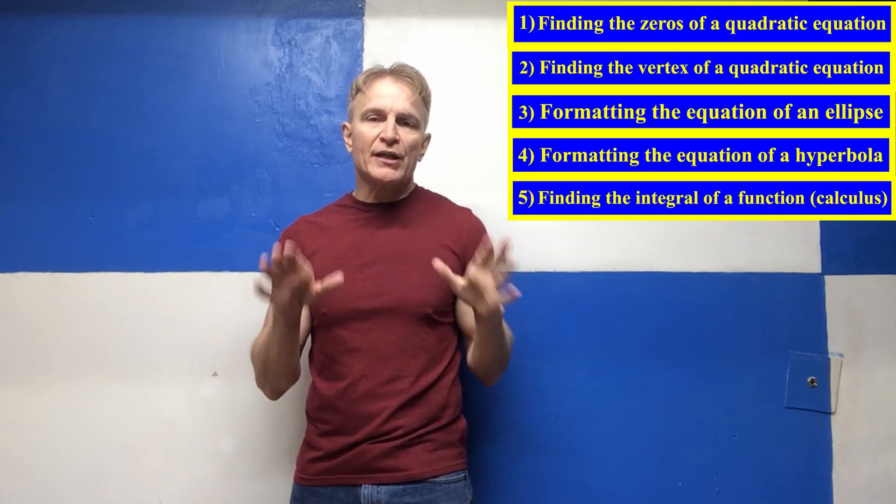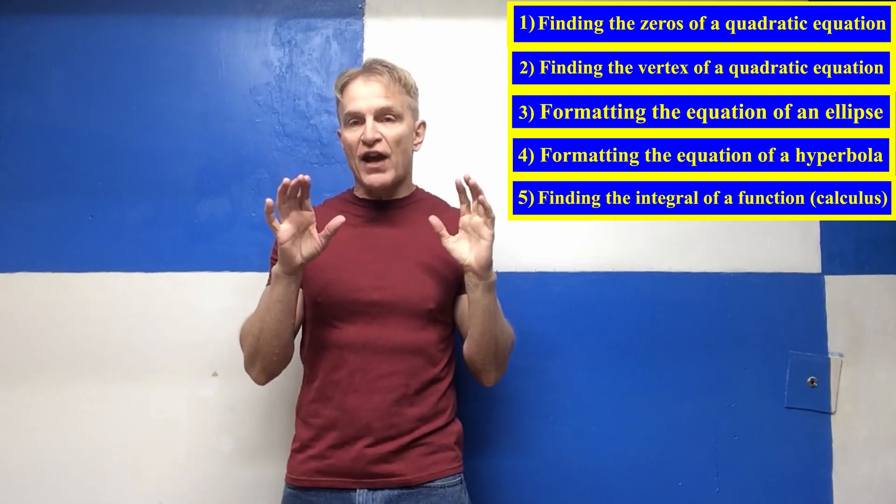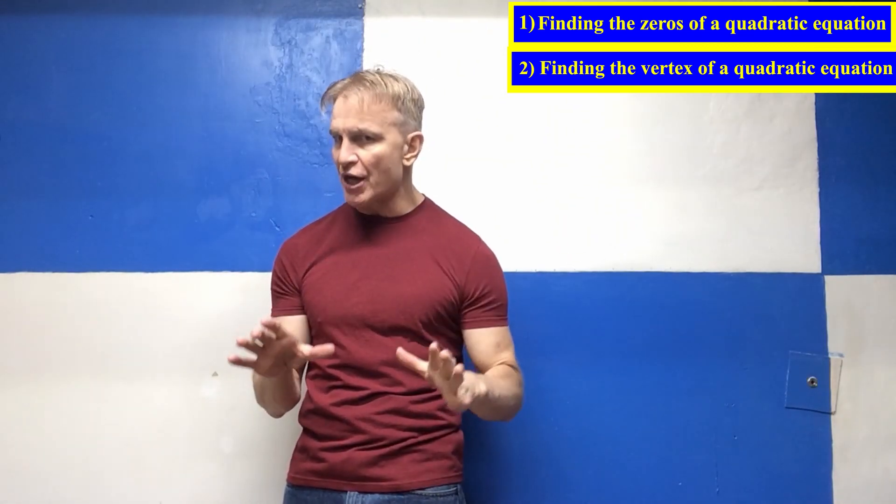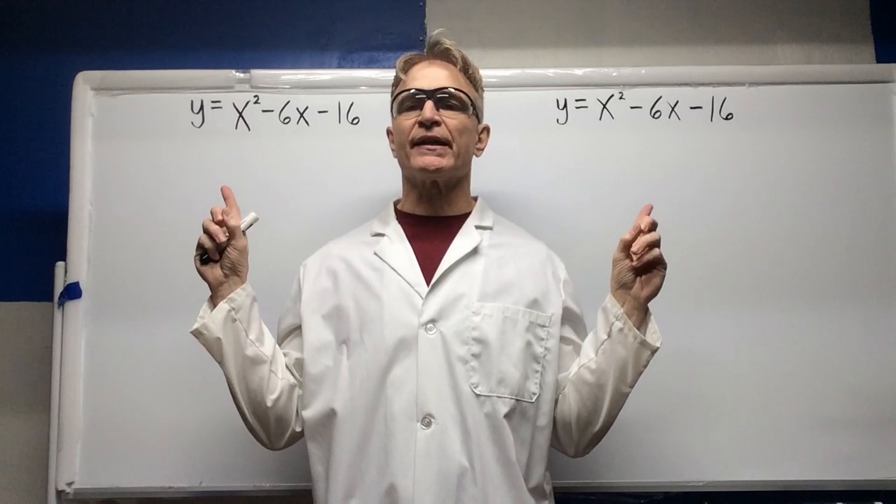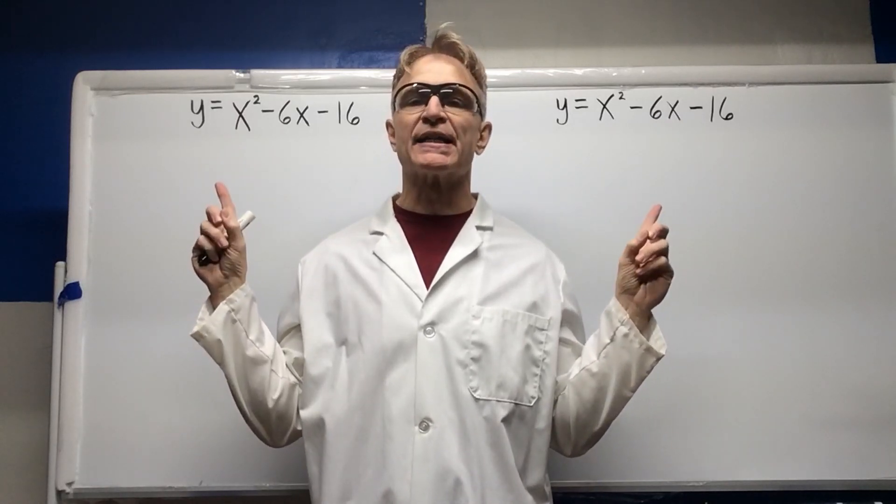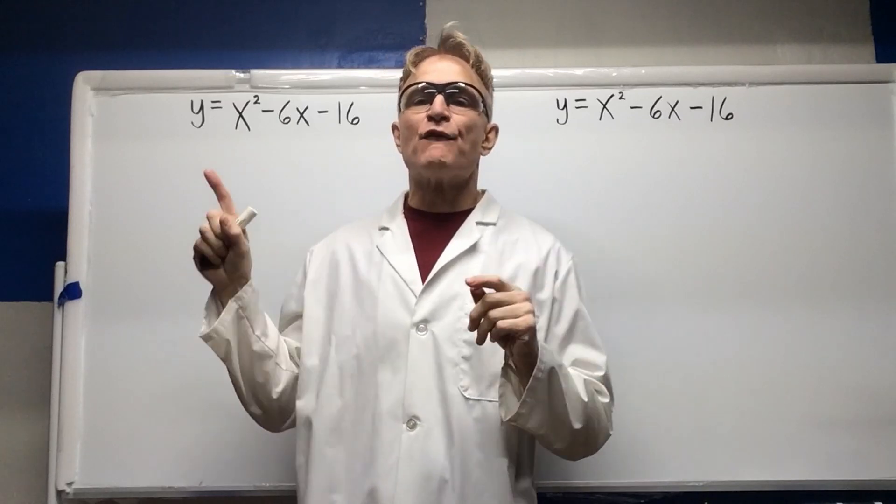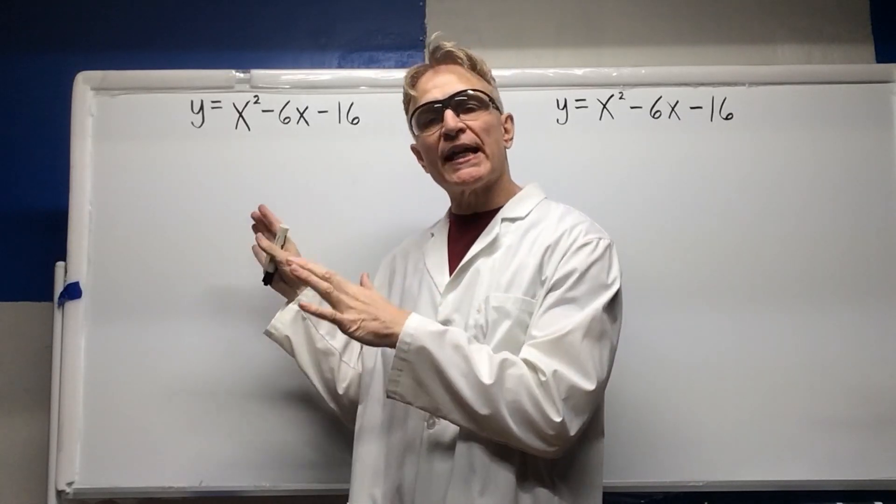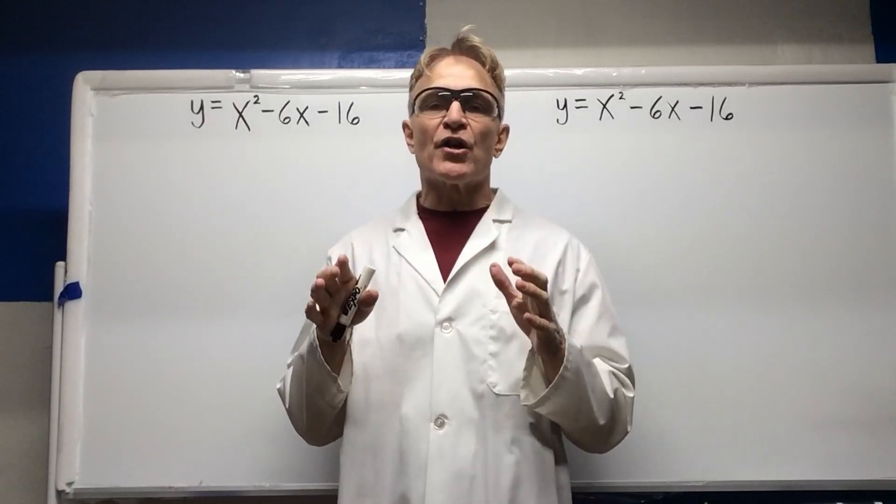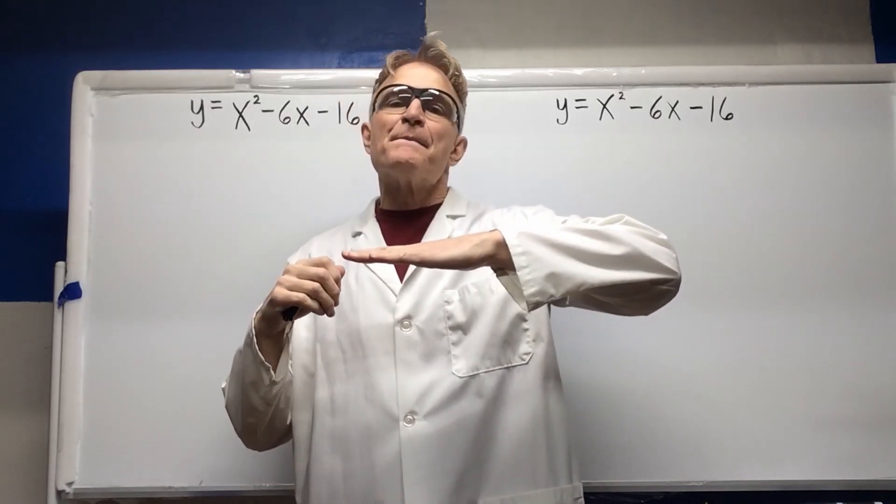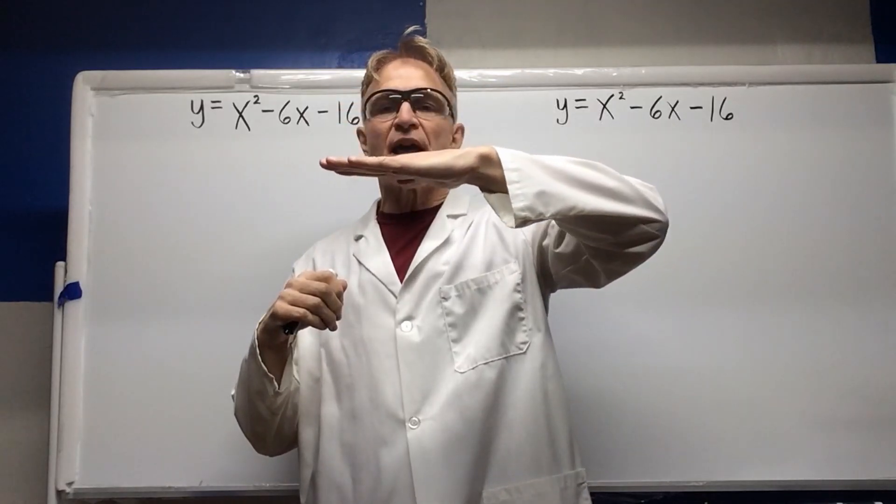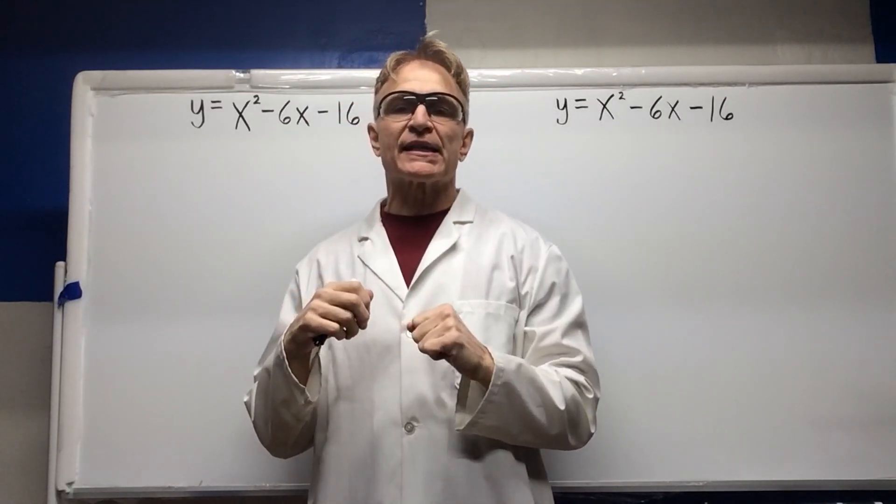So now, what we are going to do today is we are going to find the zeros and the vertex of a quadratic equation at the same time. So what you see here is the same exact quadratic equation on both sides. So what we are going to do is, for this equation, we are going to set it equal to zero. When we set a quadratic equation equal to zero, y equals zero means that the point does not move up or does not move down from the x-axis. Therefore, we are finding where the parabola crosses the x-axis.